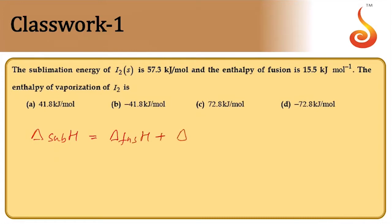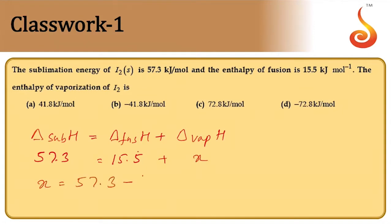The relation is: enthalpy of sublimation = enthalpy of fusion + enthalpy of vaporization. Sublimation means a solid substance directly changes into gaseous state, hence it contains two steps: fusion and vaporization. So 57.3 = 15.5 + x. Therefore x = 57.3 − 15.5 = 41.8 kilojoules. So option A is correct.